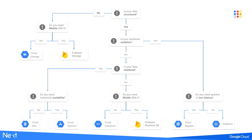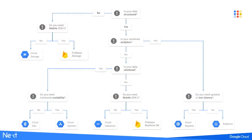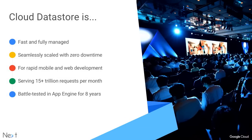Ask yourself: are you dealing with semi-structured or structured data? Are you doing something transactional rather than analytical? Can you get away without complex joins on your live data? If you answered yes to all of these, Cloud Datastore is probably a great solution for you. It's a document-oriented database that has been used in production by customers and Google itself for over eight years.